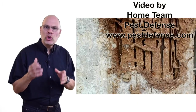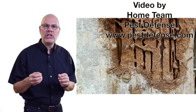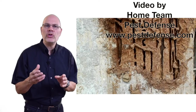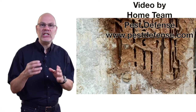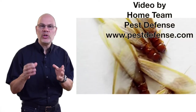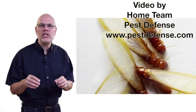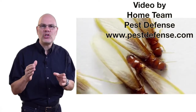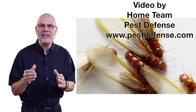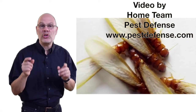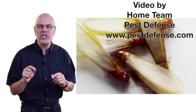Among the insects, termites have evolved a mutualistic relationship with a protozoan that enables them to digest the cellulose in wood. That's good for the termites, but it's disastrous — causing billions of dollars of damage to structures in the United States alone each year.